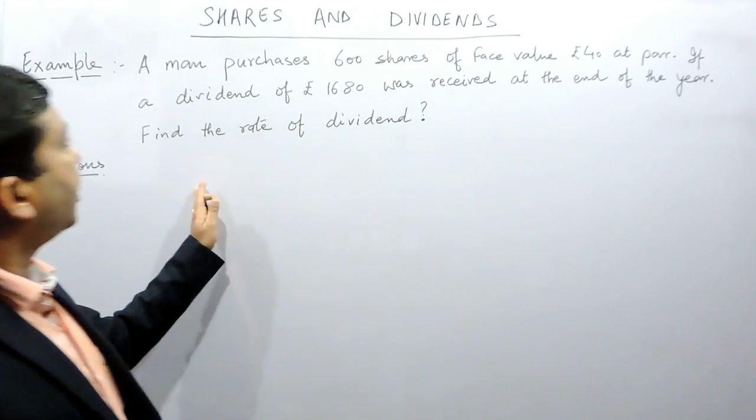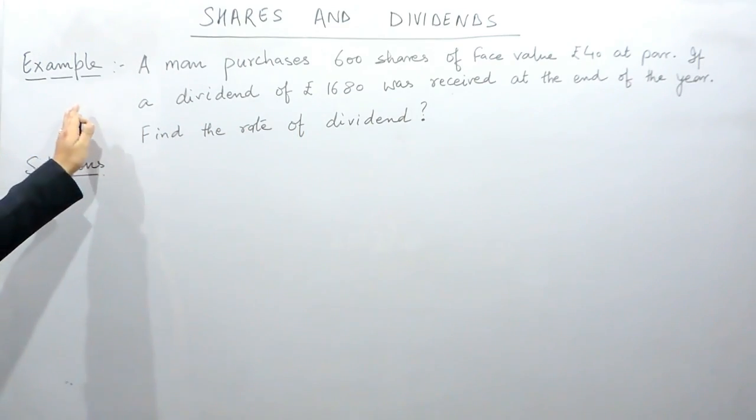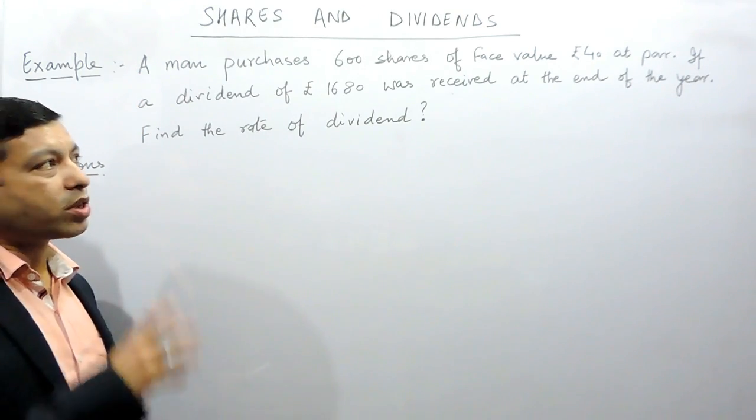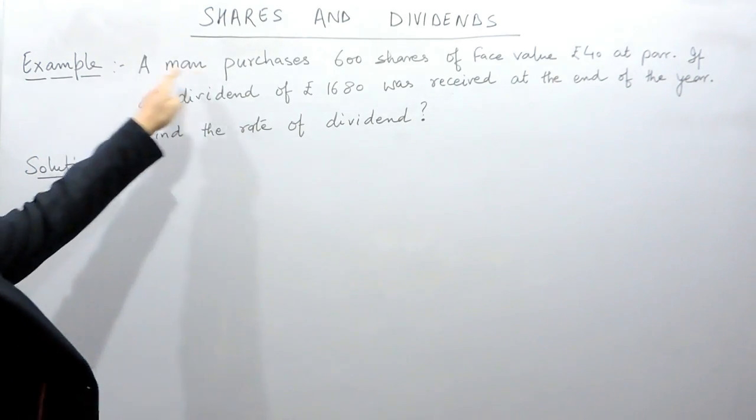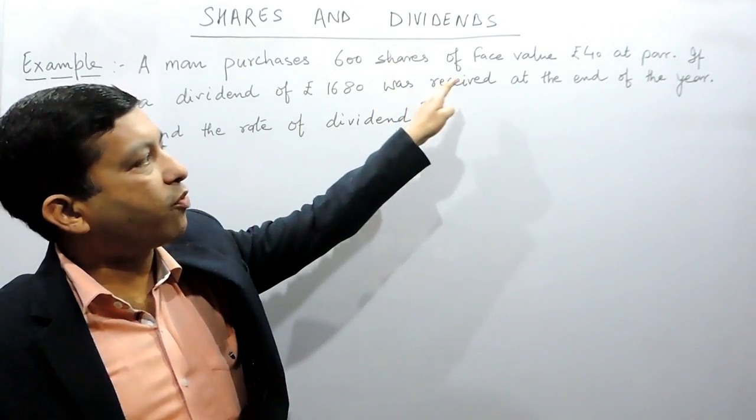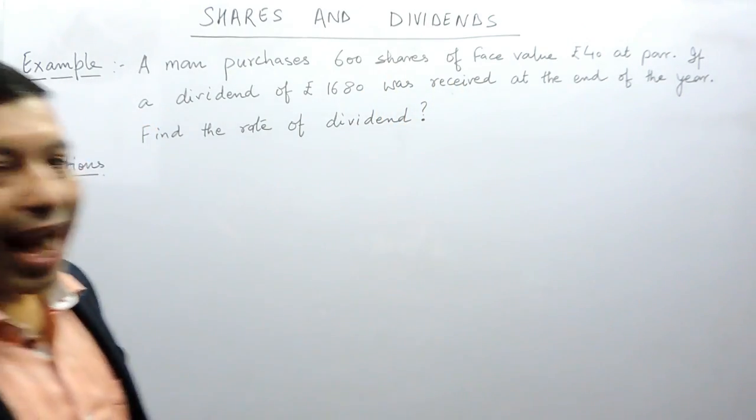Hello everyone, here we are solving the first example based on shares and dividends. As I told you, the most important is the language. The problem states: a man purchases 600 shares of face value rupees 40 at par.